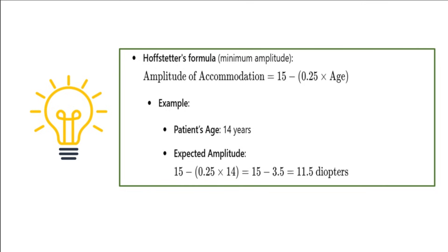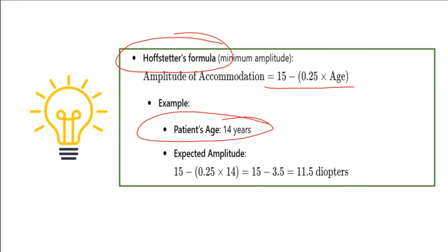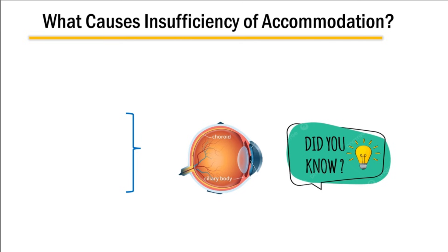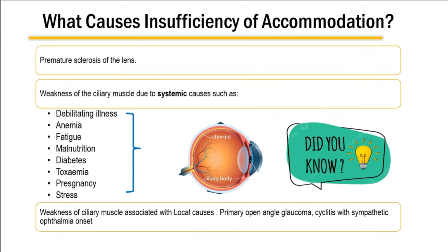To find out the expected amplitude of accommodation for a particular age, we use Hofstetter's formula: 15 minus 0.25 multiplied by the age of the patient. For example, if the patient's age is about 14 years, the expected amplitude would be around 11.5 diopters. If the patient has only 8 diopters of accommodative amplitude, this indicates insufficient accommodation at age 14.